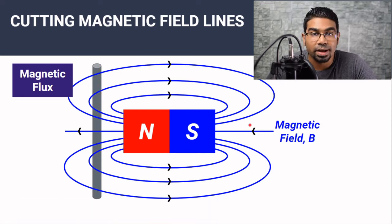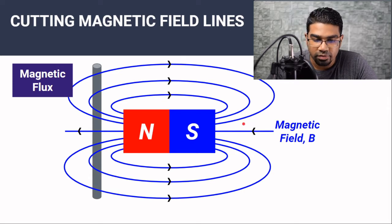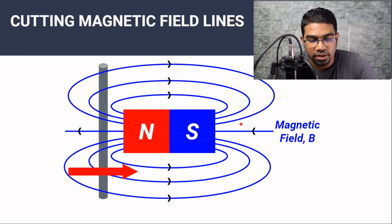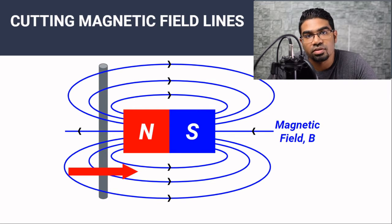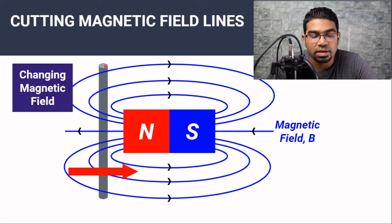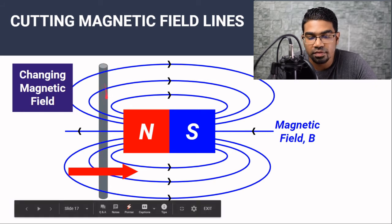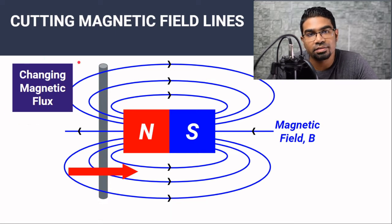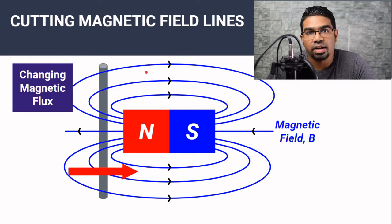Let's say we create relative motion between the magnet and the conductor. One way to do that is to move the magnet back and forth, or we move the conductor back and forth. When there is relative motion between the magnet and the conductor, the magnetic field inside the conductor is constantly changing — this is a changing magnetic field in the conductor, which can also be quantified as changing magnetic flux. And it is this changing magnetic flux, or changing magnetic field in the conductor, which causes induced EMF and therefore induced current.